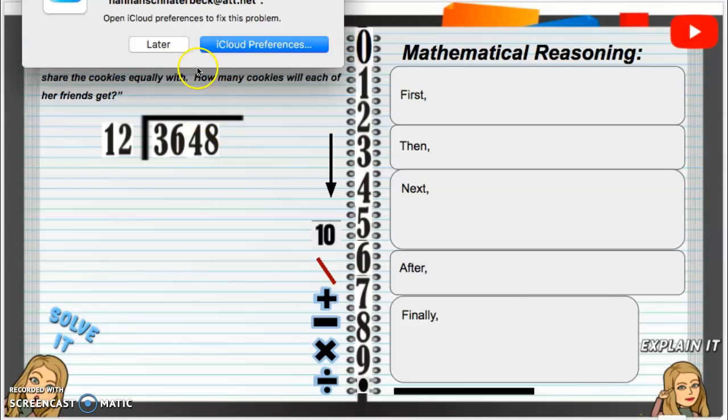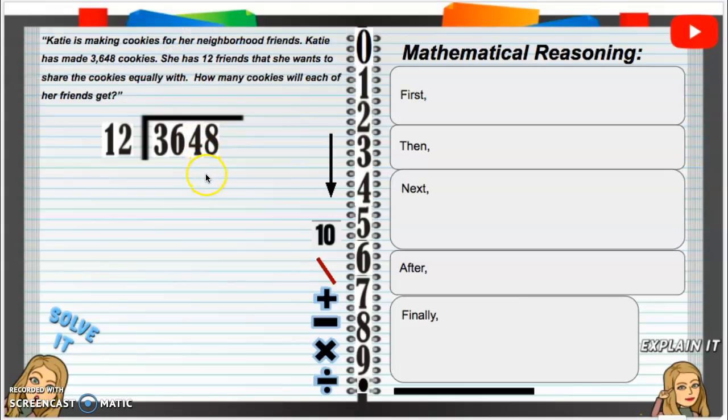Now we can begin to divide. So, we have 12 cannot go into 3, but 12 can go into 36. So, how many times can 12 go into 36? Well, I know 12 times 2 is 24. 12 times 3 is actually 36.